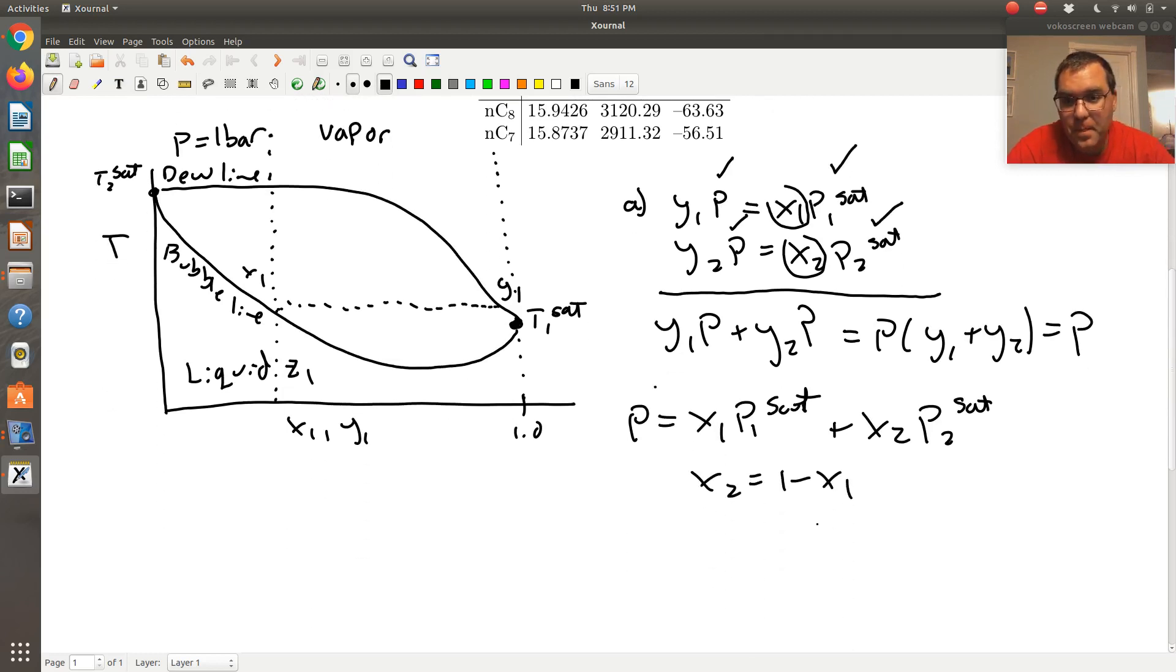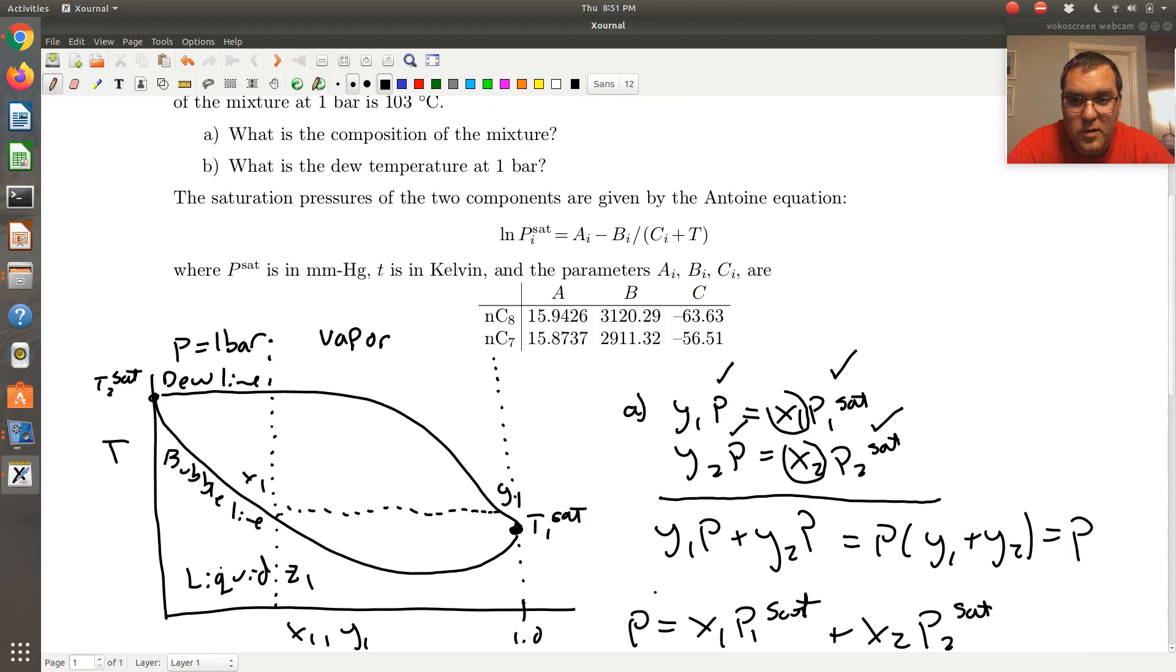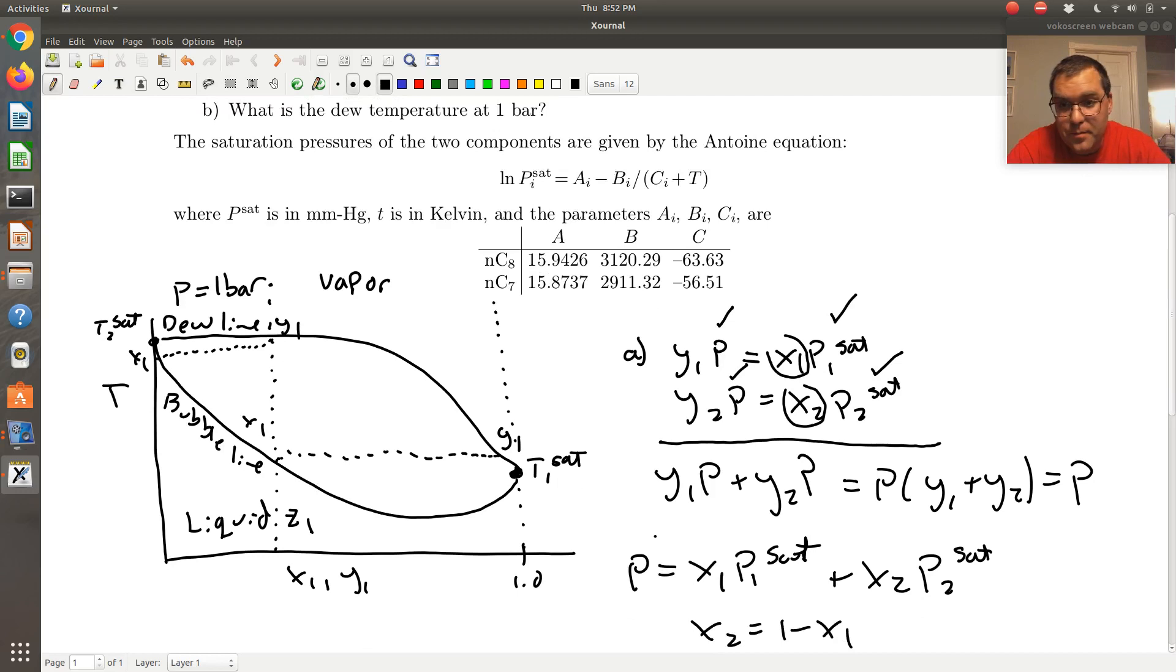B is going to be similar. What's the dew temperature at 1 bar? So, this is where my diagram definitely isn't the best. So if I take this mixture of composition Z1, at my dew point, I would have this Y1 in equilibrium with this X1, but what's unique about my dew point is that at the dew point, Y1 is equal to Z1.